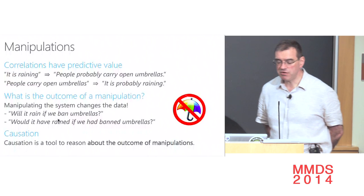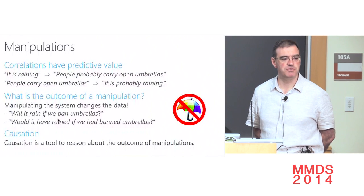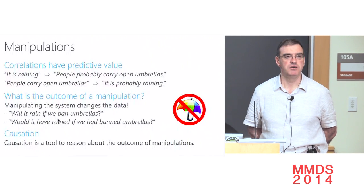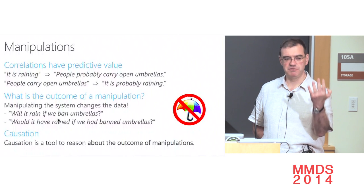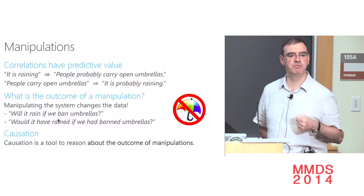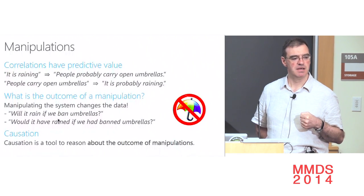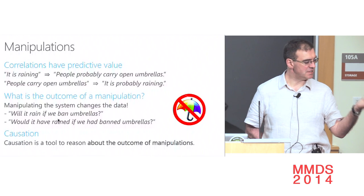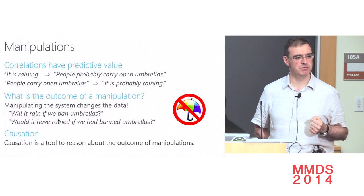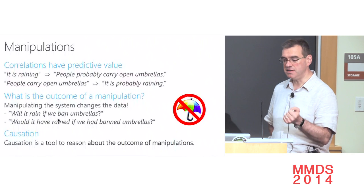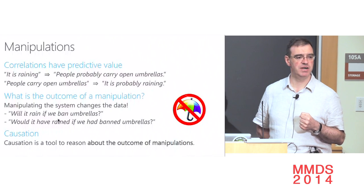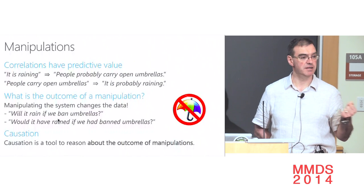What's happening is the confusion between a correlation and the outcome of a manipulation. If you have a correlation, it has predictive value — for instance, there is a positive correlation between it raining and people walking with open umbrellas. If you see it's raining, it's likely people are going to walk with open umbrellas, and conversely if you see open umbrellas, it's likely raining. This is predictive — this is machine learning.